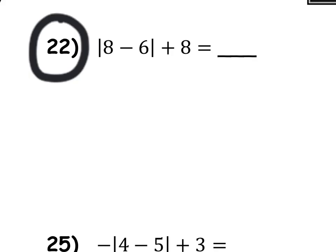So 8 minus 6 is 2 plus 8. The absolute value of 2 is just 2, so we can drop the signs. Now we get 2 plus 8, and 2 plus 8 is 10.